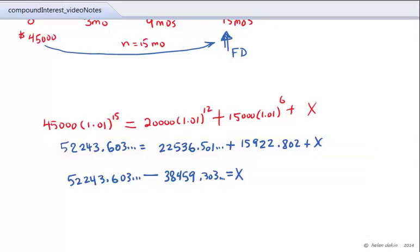So the balance that is outstanding at 15 months is going to be a total of, let's work this out on our calculators, the balance outstanding works out to be $13,784.30. Now with the final answer, we can round that off to the nearest penny. And so at the 15-month time period, that is the size of the final payment that is going to be made on this loan.